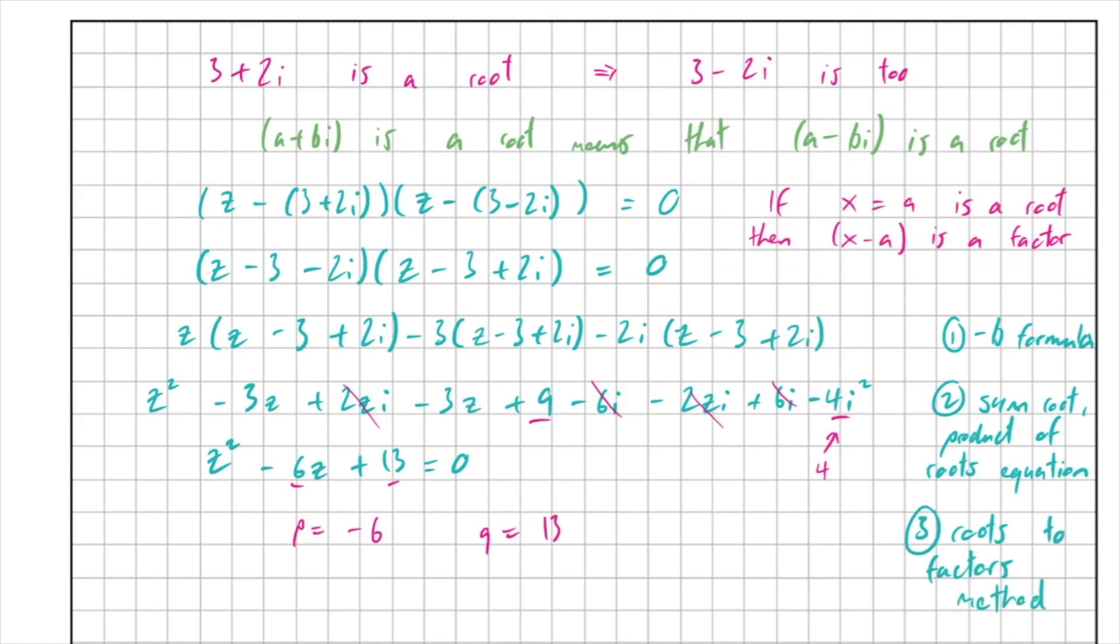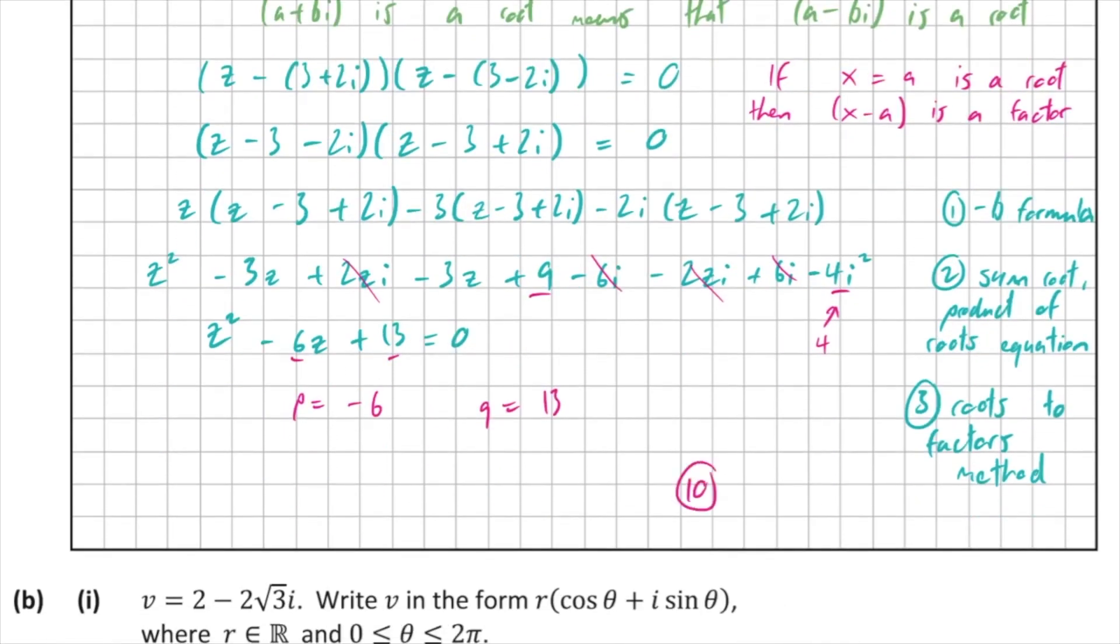So that's our third way of getting what we want. We're going to call that the routes to factors method, and it just goes to show how many ways there are of approaching some problems. I'm sure there's another couple of ways of doing this that you can think of that will get you the right answer, and if they work, then by all means do use them. But I hope you found this helpful. And part a, regardless of how you did it, is going to get you 10 marks, which is quite nice, especially if you did it way number 2 because it would have been very quick, but 10 marks regardless.